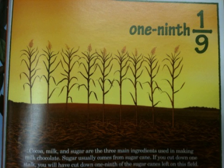One ninth. Cocoa, milk, and sugar are the three main ingredients used in making milk chocolate. Sugar usually comes from sugar cane. If you cut down one stalk, you will have cut down one ninth of the sugar canes left on this field.